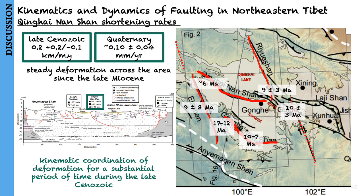One thing they note is that exhumation rates in the ranges bounding the Gonghe Basin are significantly lower than apparent late Quaternary incision rates along the Yellow River. This reinforces the notion that canyon incision significantly lagged range growth and filling of ponded basins in this part of the Tibetan Plateau.